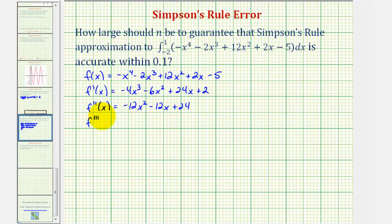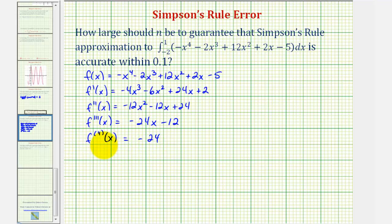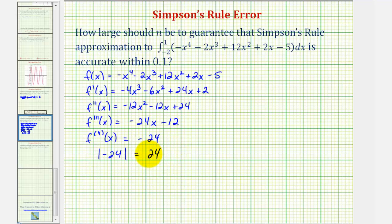The third derivative function is negative 24x minus 12. Notice that our fourth derivative function is going to be a constant function — it equals negative 24. Our goal is to find the absolute value of the maximum function value of the fourth derivative on the closed interval from negative two to positive one. Because the fourth derivative is constant, it is just a horizontal line through y equals negative 24. Therefore, the absolute value of the maximum is the absolute value of negative 24, which is positive 24.